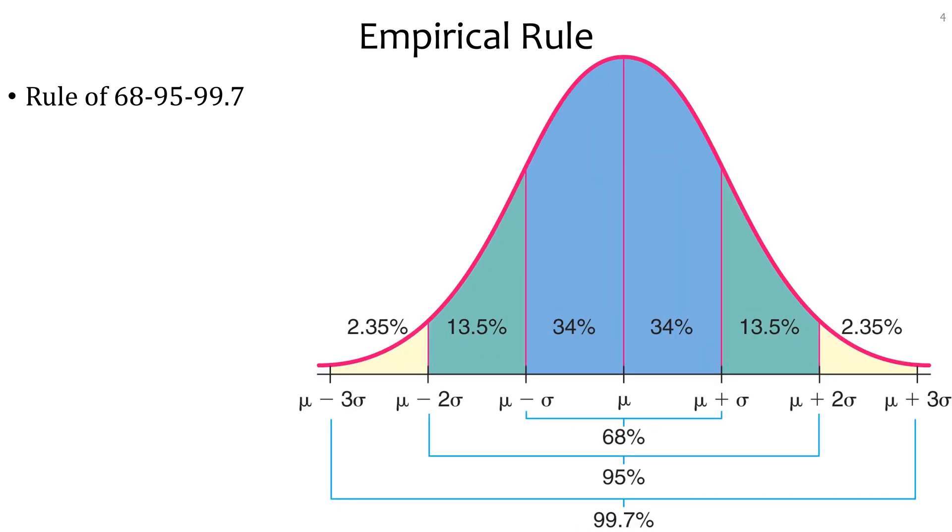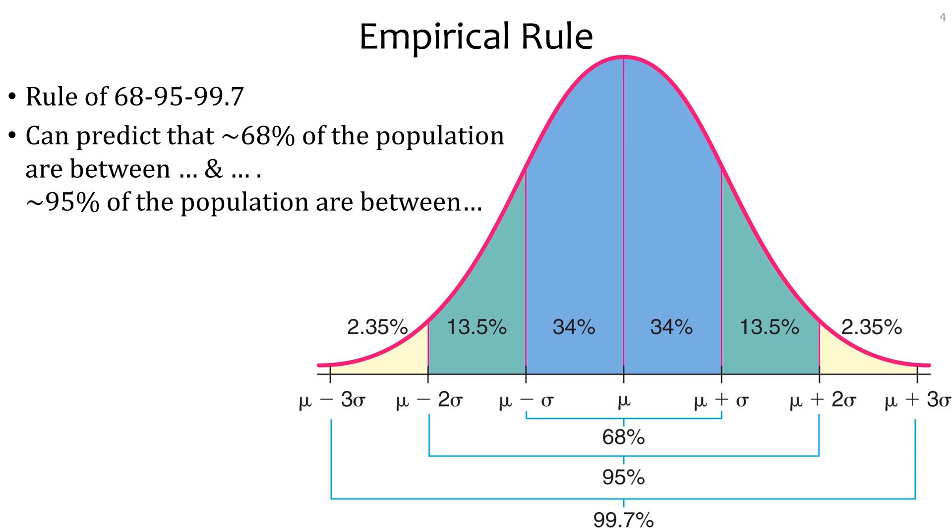Another thing you can use in your paper is the empirical rule. The empirical rule also has another name, which is the rule of 68, 95, 99.7. Does that ring a bell? You had a shape like this, usually well colored, where you have a bell curve and you can predict approximate amounts of data under each section.